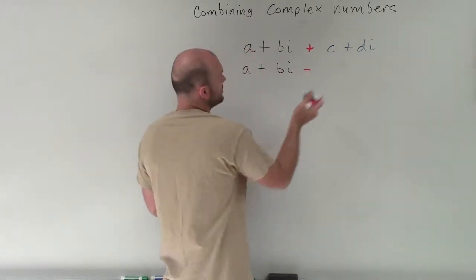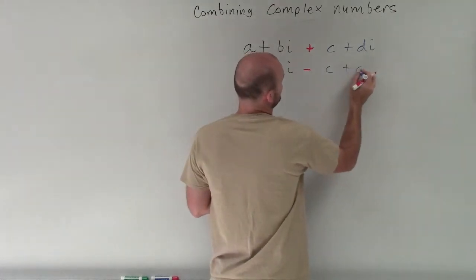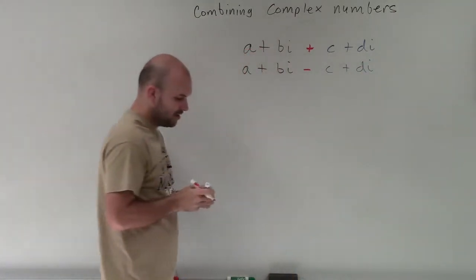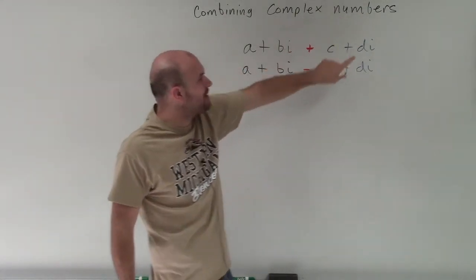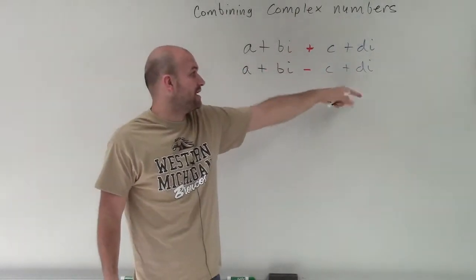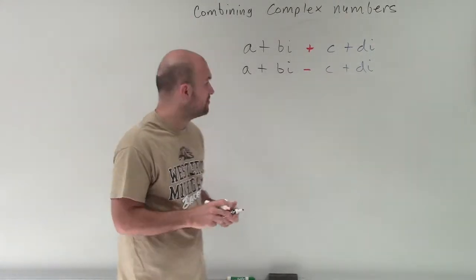Now, you might say, I know a plus bi is a complex number, but how do I know that c plus di is a complex number? Well, remember, when we have complex numbers, anything that's multiplied by i is our imaginary component, and then adding to it is our real component.